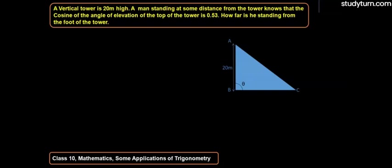The question given here is: A vertical tower is 20 meters high. A man standing at some distance from the tower knows that the cosine of the angle of elevation of the top of the tower is 0.53. How far is he standing from the foot of the tower?